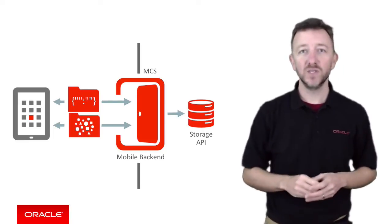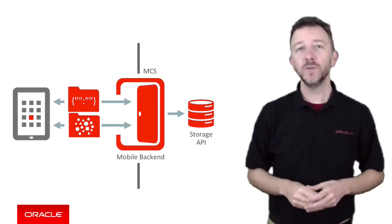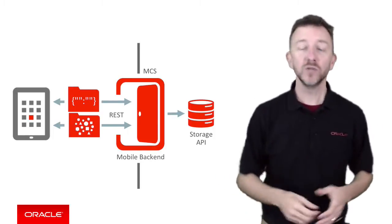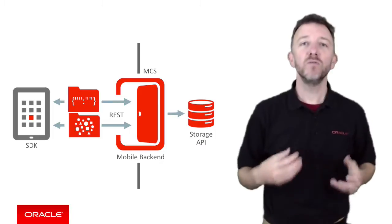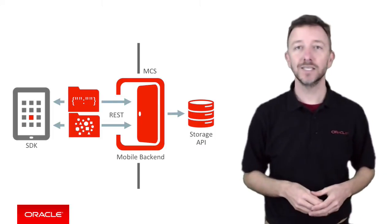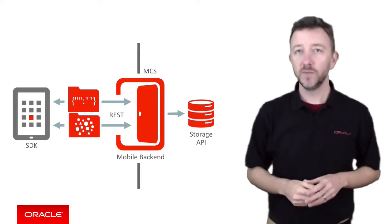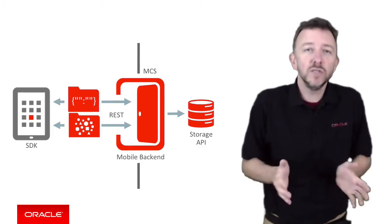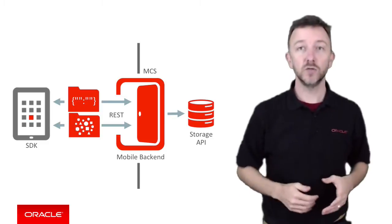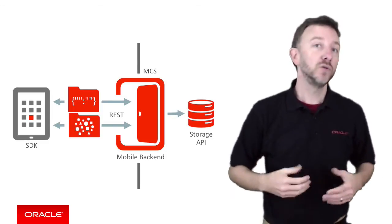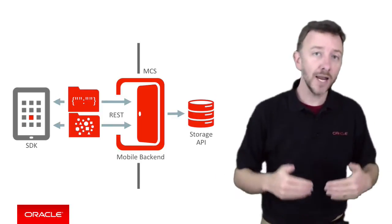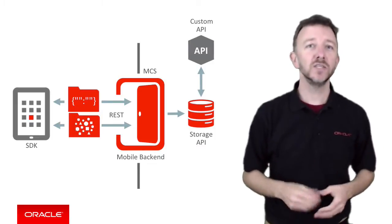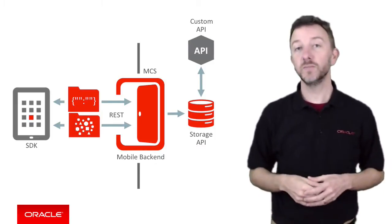In order to access the data once stored within the MCS storage API, mobile developers can access it via REST APIs published through an MCS mobile backend. Alternatively, the MCS client SDK provides native mobile APIs for doing exactly the same. Which method mobile developers choose is based on their own preferences, though the MCS client SDK provides APIs that reduce the amount of code needed to work with the remote MCS storage API. Additionally, MCS service developers working inside MCS can access the storage API through their custom API Node.js code, which allows the service developer to manipulate storage on the mobile developer's behalf, indirectly.